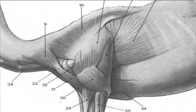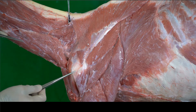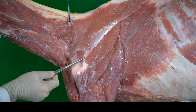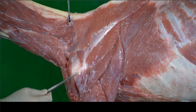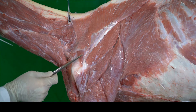They originate on the back, neck and thoracic region and attach to the scapula or humerus. These muscles could be divided into two layers: the superficial layer, and under the superficial there is another layer, the deep layer.